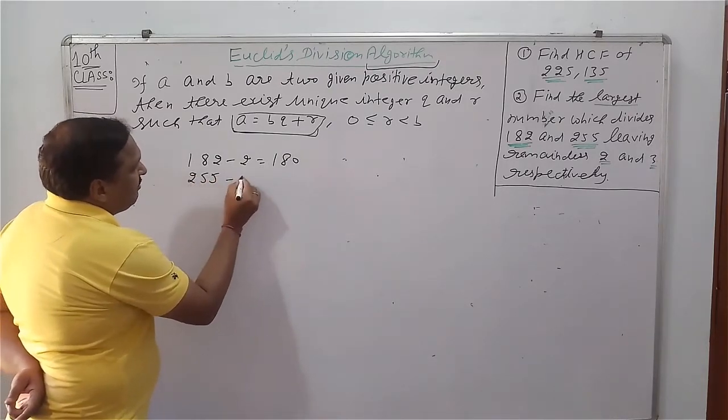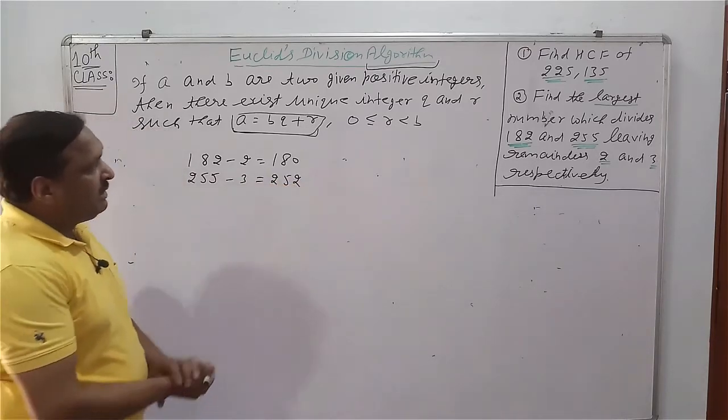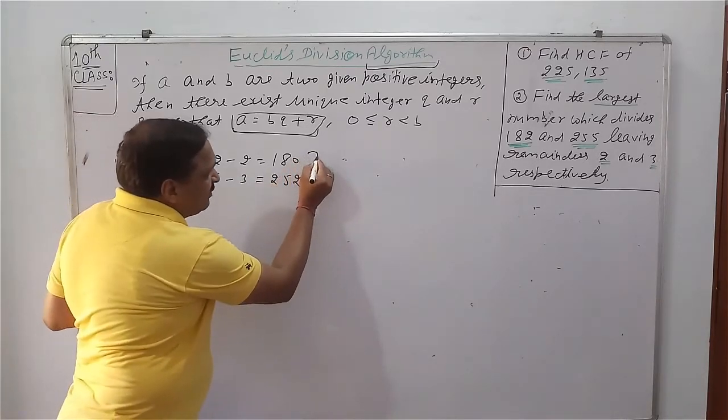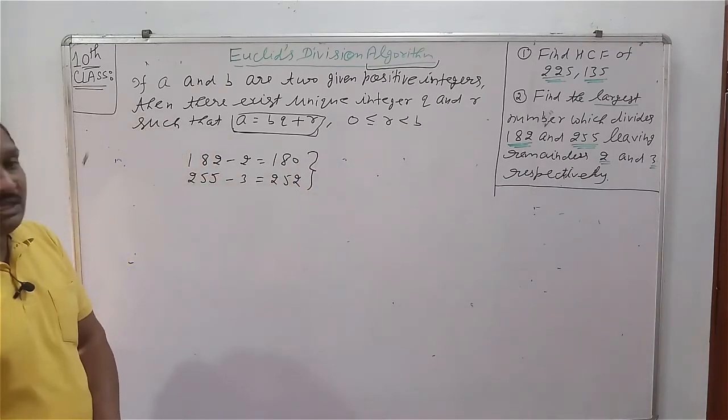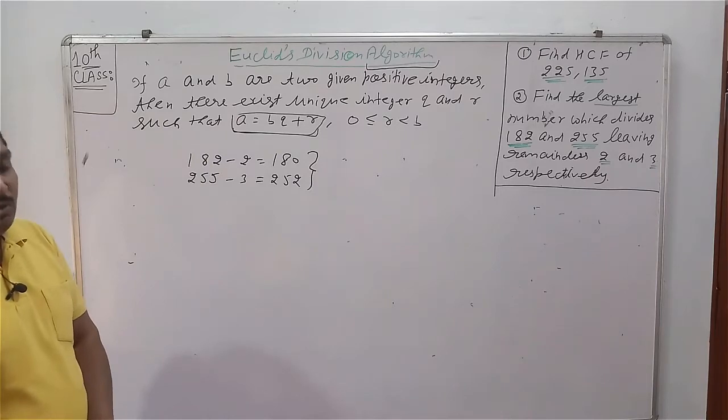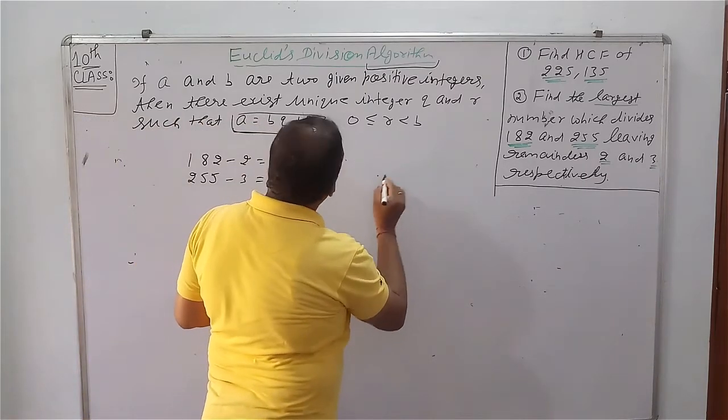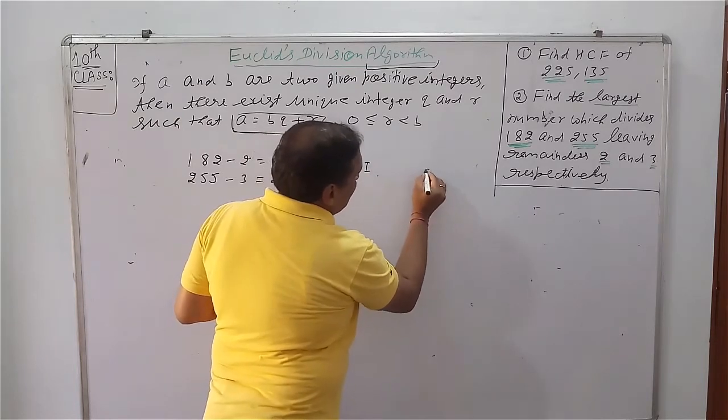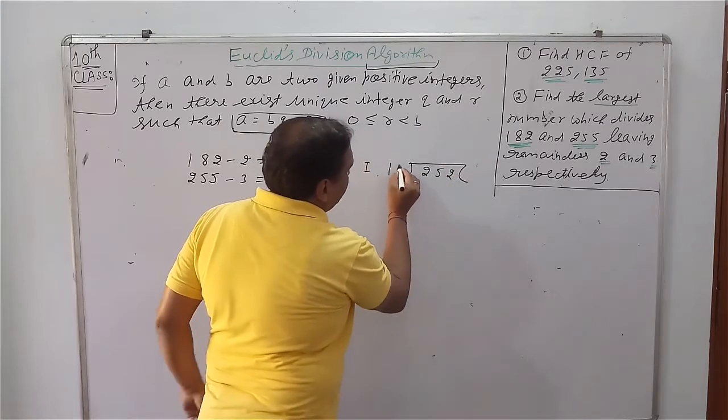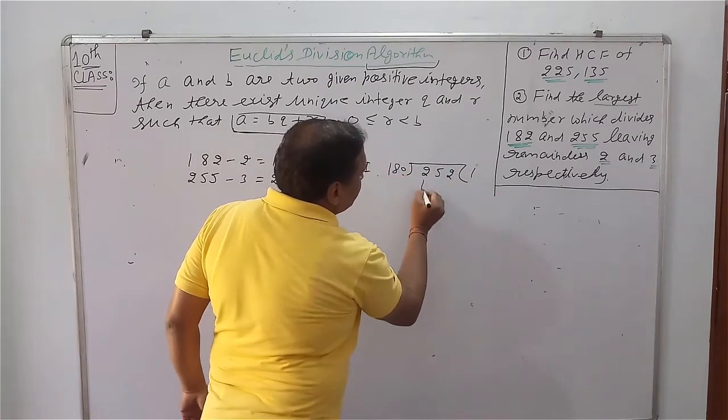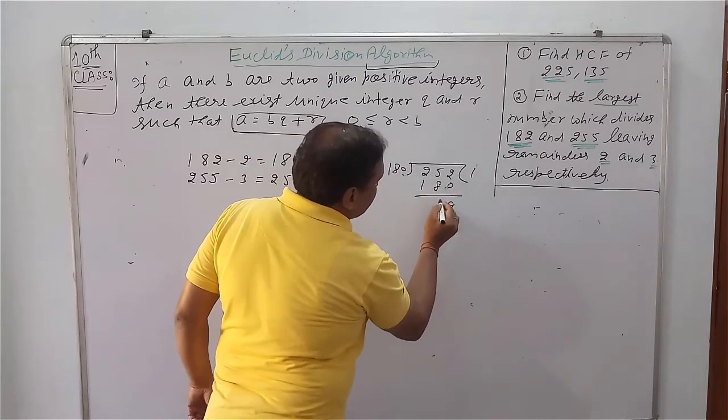We will find the HCF of these two numbers, 180 and 252. Firstly, we use long division method. In first step, 252 is A and 180 is our B. 1, 2, 15, minus 8, 7.